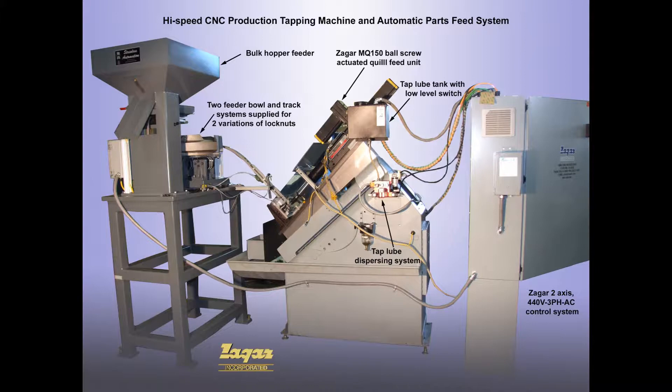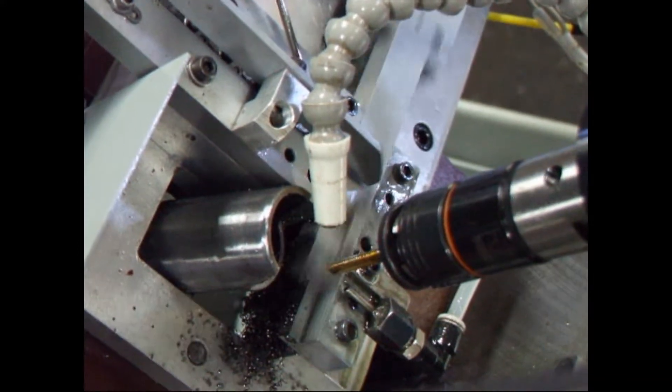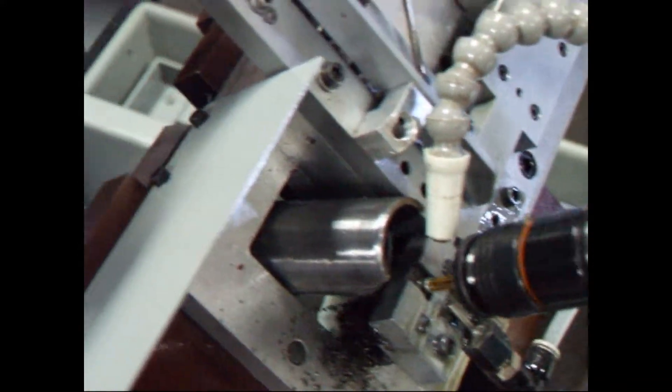A vibratory feeder bowl system, bulk hopper feeder, and auto-load unload fixture enables unattended operation. Lock nuts are positioned mechanically at the tap station and automatically ejected to a parts pack.